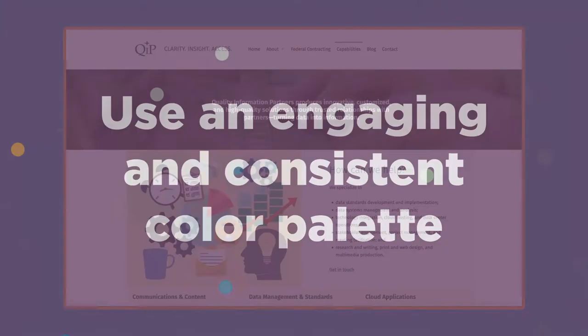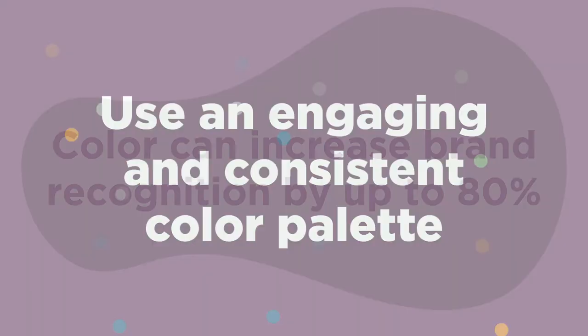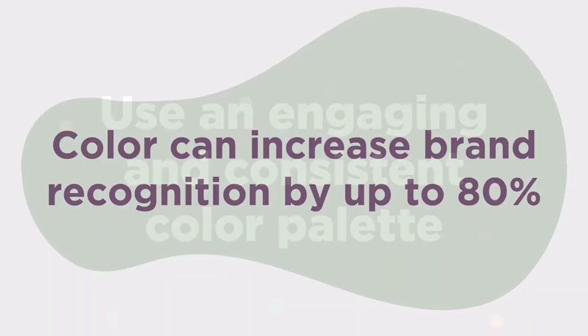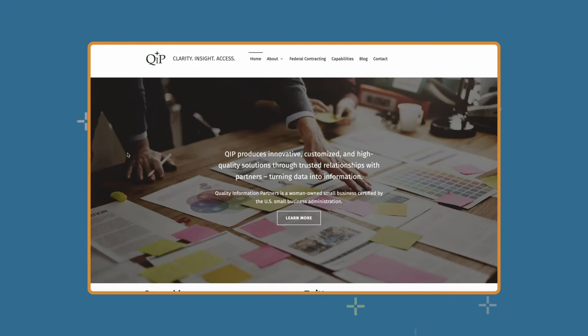Use an engaging and consistent color palette. According to Forbes.com, color can increase brand recognition by up to 80%. Colors have a psychological impact on the viewer, meaning that the colors you choose can shape how the viewer perceives your site and brand. On the QIP website, we primarily use a dark green color, which is used consistently throughout the web pages and in our marketing materials.